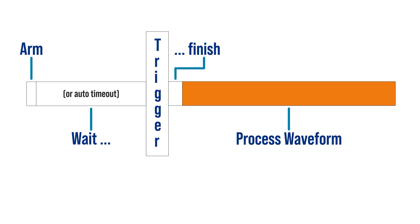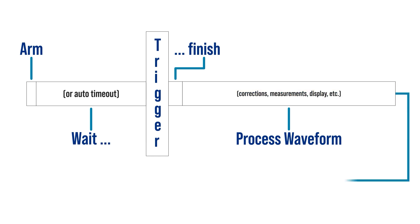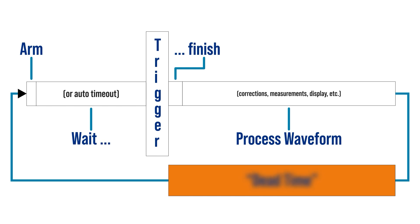Here's a timeline of how a scope acquisition works. The trigger arms itself and starts looking for the event. If Auto Mode is enabled, it times out after some amount of time. Once the trigger happens, the acquisition buffer continues filling. Then the data is transferred to a computer for processing and measurements and all the other fun scope stuff. Once all of that is done, the trigger circuit rearms itself. Now, the time from when the trigger happens until the scope can rearm, it isn't watching the signal anymore. We call that the acquisition dead time.